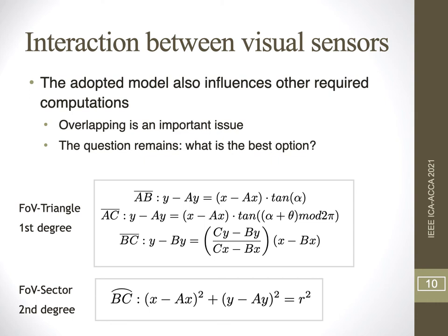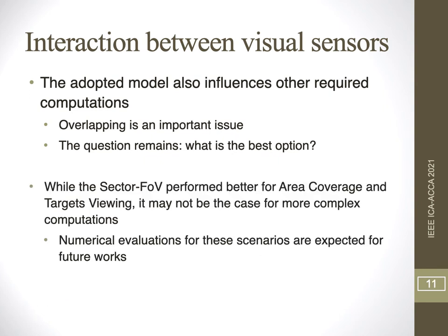For the triangle FOV, we have only first-degree equations with low computational cost. But when considering the sector FOV, the intersection between a curve and a line is much more complex, involving second-degree equations which demand much more computational cost. So while the sector FOV performs better for coverage area and target viewing, it may not be the case for more complex computations. Numerical evaluations for these complex scenarios are left as future work, since they are much more complex to perform. In this initial evaluation, we focused on more common executions of visual sensing models.